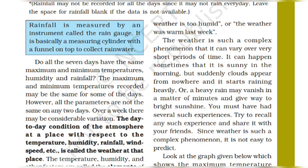Rainfall is measured by an instrument called a rain gauge. So rainfall jo hota hai, we measure it with the help of an instrument — that is the rain gauge. It is basically a measuring cylinder with a funnel on top to collect rain water.